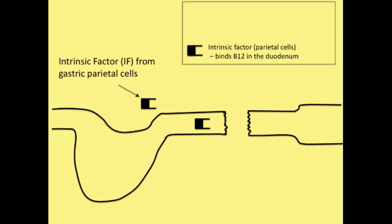Here we have intrinsic factor. This is a glycoprotein that binds to B12. And although it's produced in the stomach, intrinsic factor doesn't actually bind to B12 until the duodenum when B12 is no longer bound to R protein. Remember, R protein is bound to B12 in the stomach.